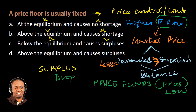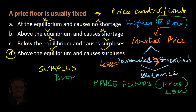Option D: above the equilibrium — correct — and causes surplus — correct. So the answer, option D, is the right answer. Thank you for watching. See you in the next video. Bye bye.